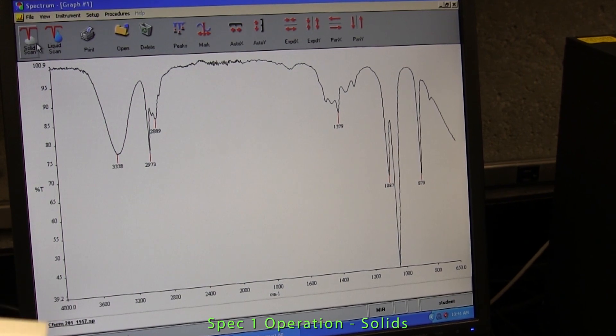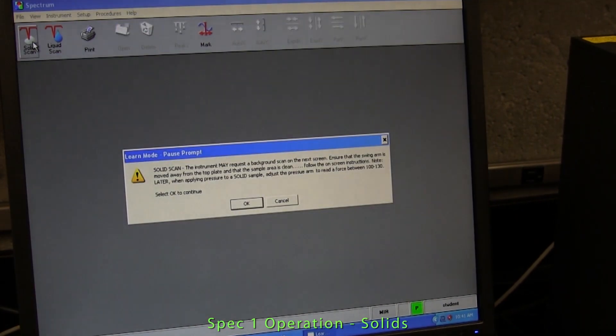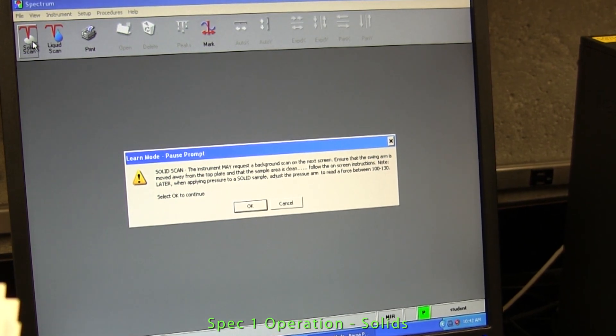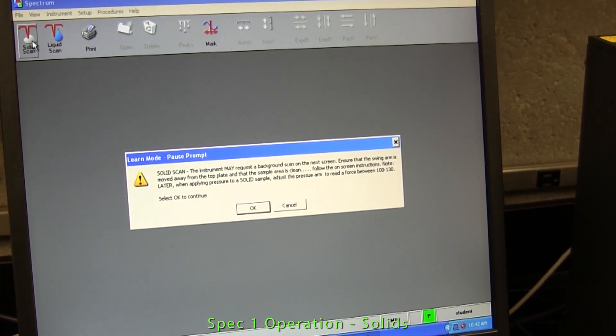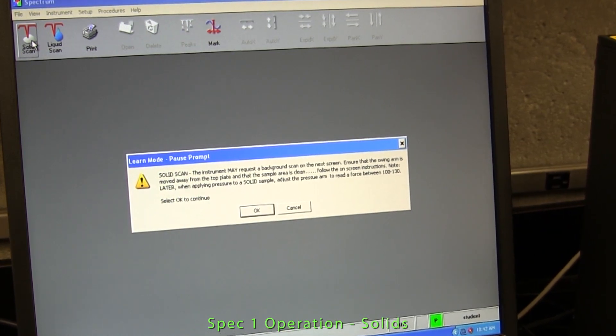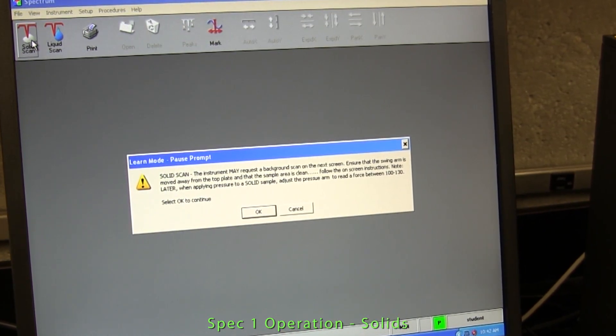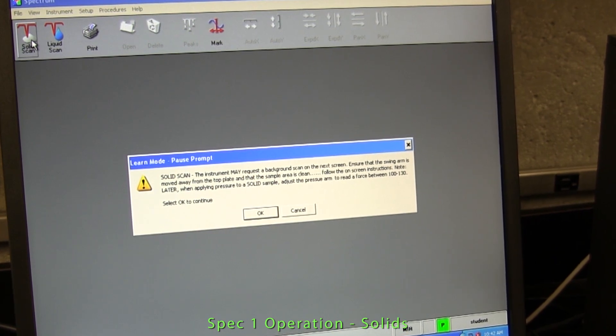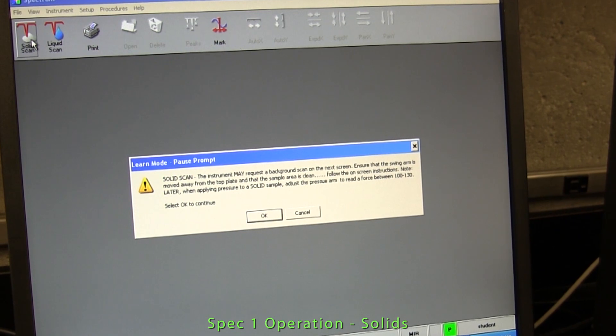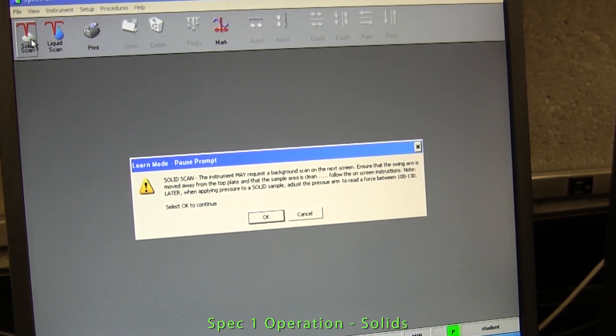Once you've instructed the instrument to obtain the spectrum of a solid, a prompt appears to tell you that the instrument may first request a background scan. If this is needed, the instrument will collect and store an IR spectrum of air. Since your sample is being run in air, in this way the instrument can subtract the spectrum of air from the spectrum of your sample run in air. Generally, the instrument will call for a background spectrum only when software is started up.